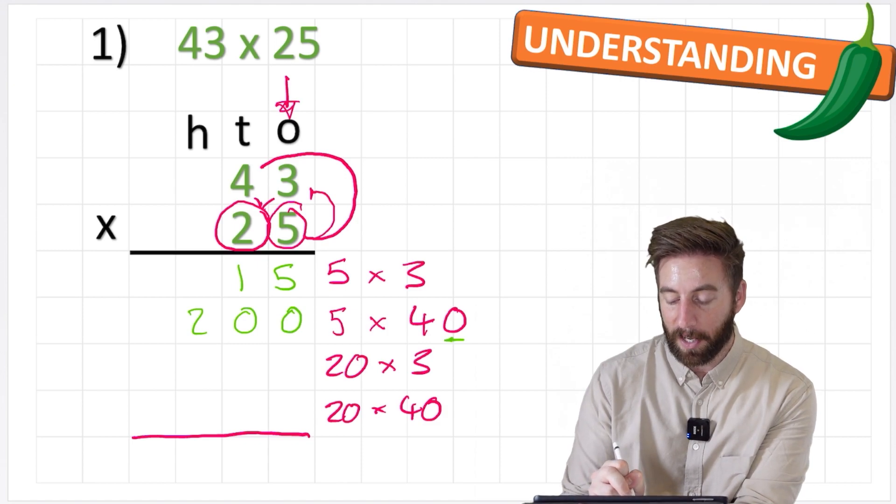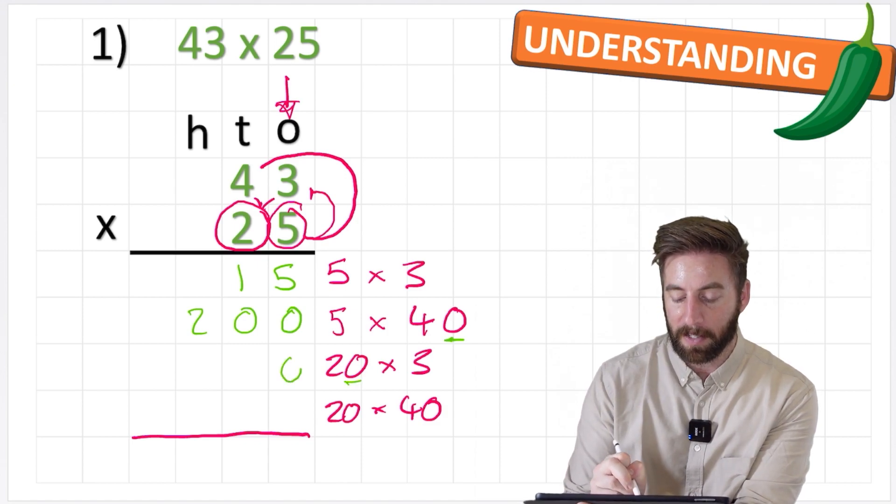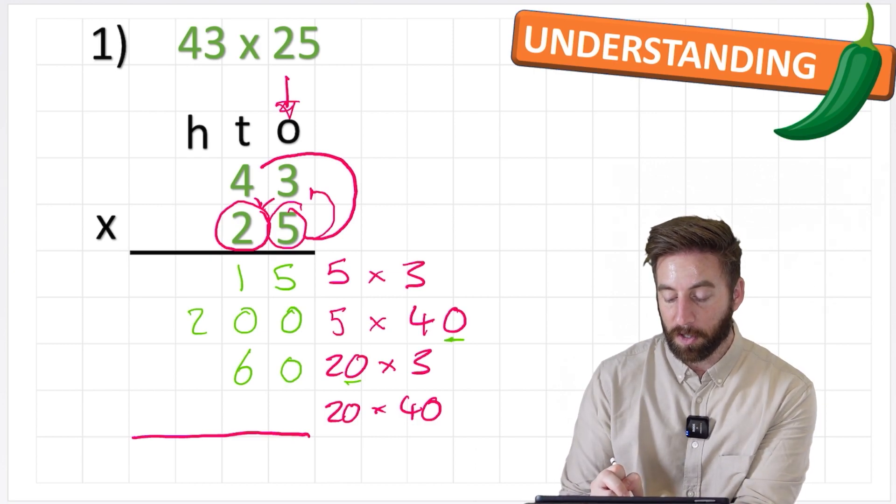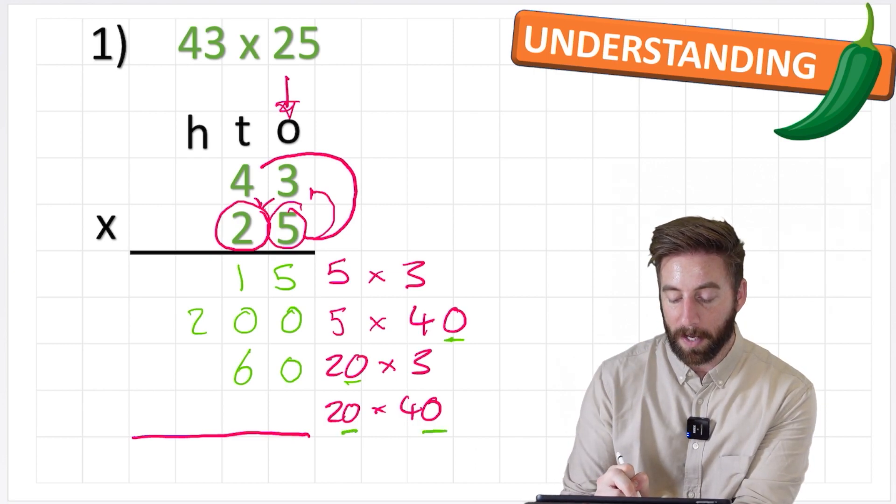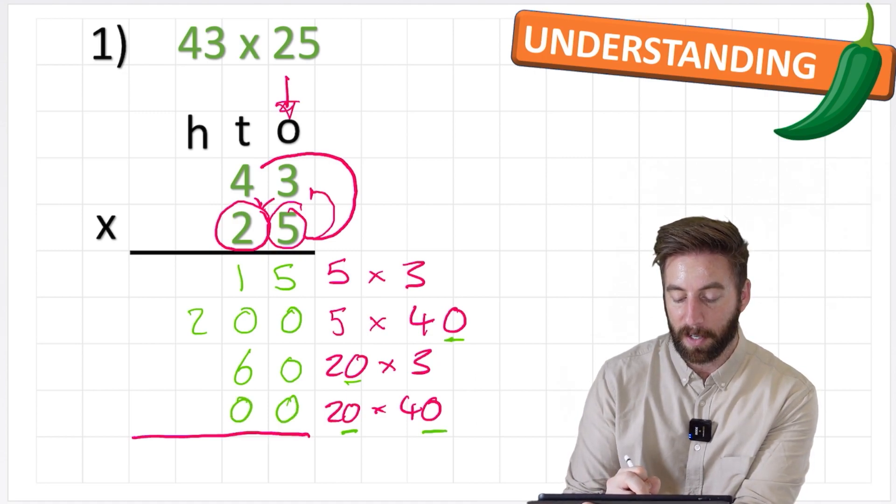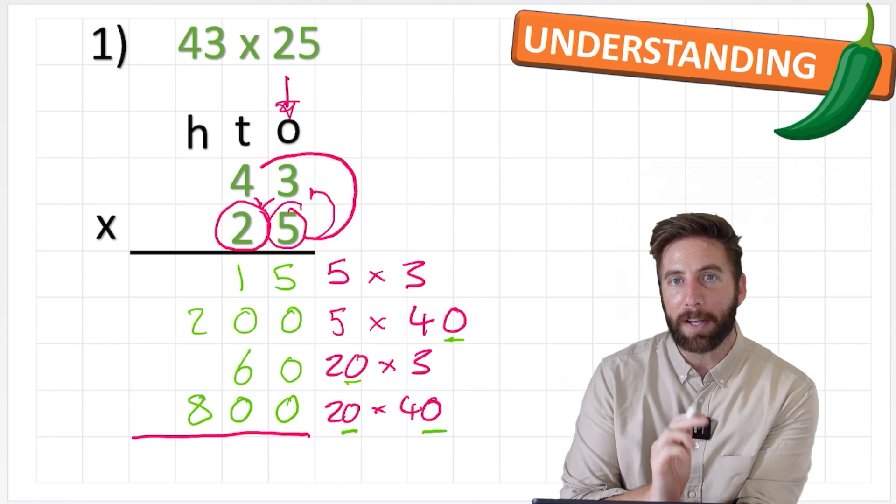Now I've got 20 times 3. Again, put my placeholder in place. 2 times 3 is 6. My next one says 20 times 40. This time I've got 1, 2 placeholders. So I put 1, 2 placeholders in place and I can do 2 times 4 is 8.